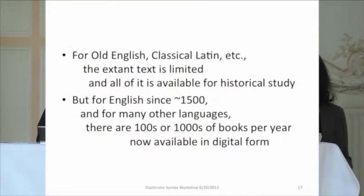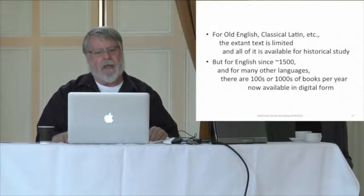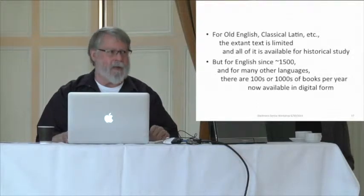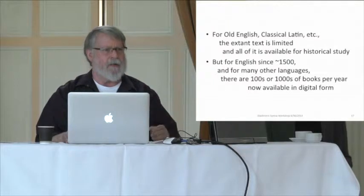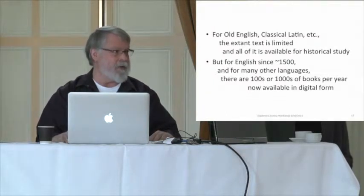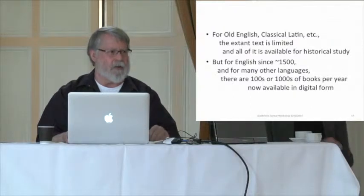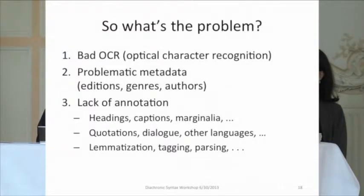For Old English, Middle English, Classical Latin, or Sanskrit, we're stuck — the extant texts are limited. But for English since 1500 and many other languages, there are hundreds or thousands of books per year now becoming available in digital form. The problem is bad optical character recognition. If you've looked at texts in the Gallica collection at the Bibliothèque Nationale Française or the HathiTrust, you'll see the issues. There's also problematic metadata — editions, genres, authors, dates — and lack of annotation for headings, captions, marginalia, foreign language quotes, and quotes from earlier authors.